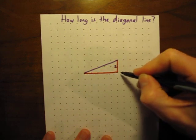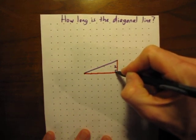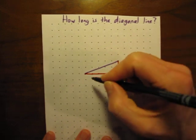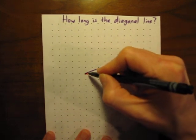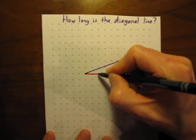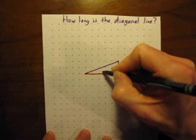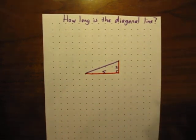How about the length of this leg here? By the way, this is our right angle right there. How long is this leg right here? It's going over one, two, three, four, five. So the length of this leg is five.